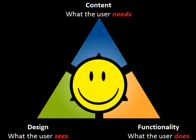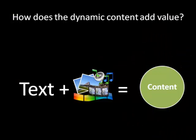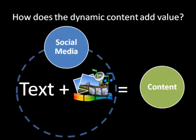Remember, the content is what the user wants and needs — that's what's drawing them to your website in the first place. Depending on how the site is designed and how the functionality works, that could distract them and not allow them to get the content. So everything should be aligned with the purpose of the site. How does the dynamic content add value? Think about it in terms of the overall purpose of the site. Does it add to the user's experience, or does it take away? If it distracts from the purpose, you may want to reconsider including it.